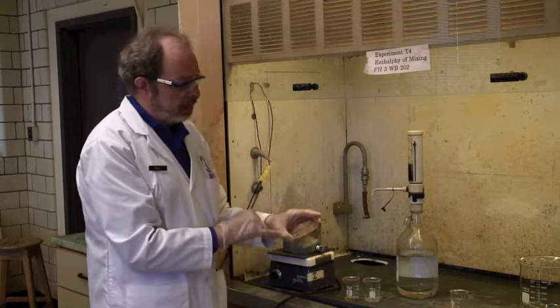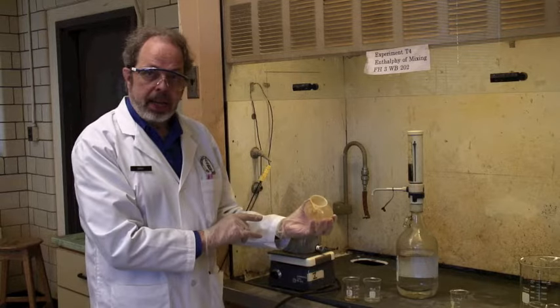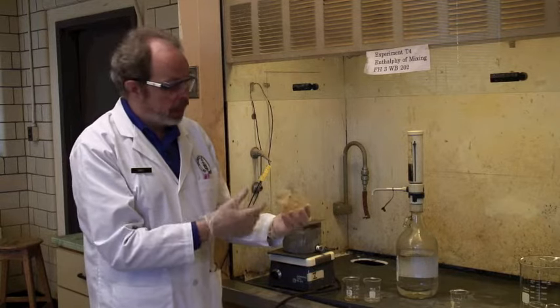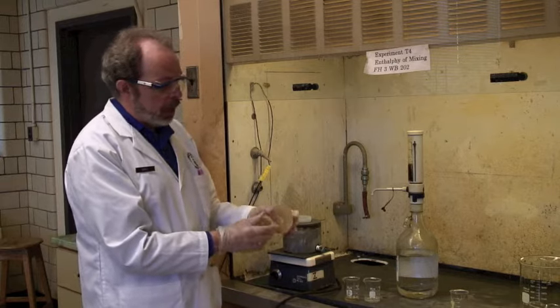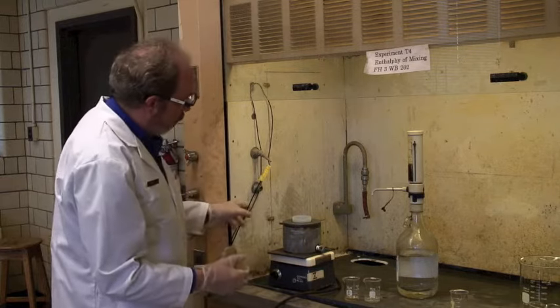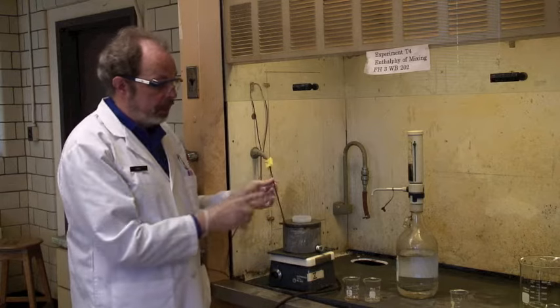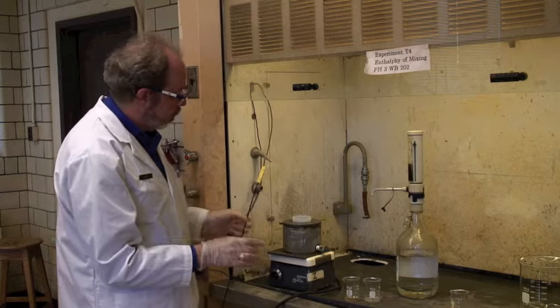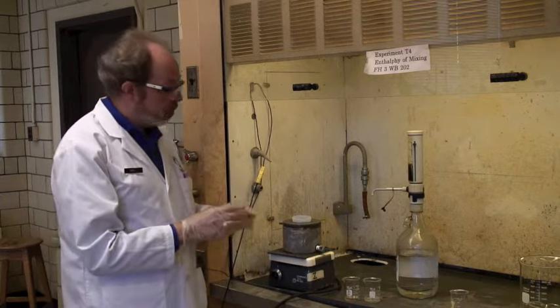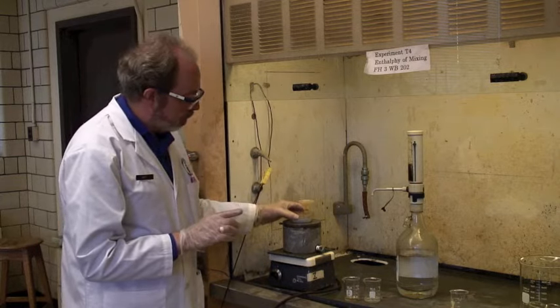The lid for the calorimeter has a funnel for adding the second chemical. You start off with one chemical, and then you add the second through the funnel, and there's also a hole for the thermocouple. This is a Teflon-coated thermocouple. It will detect temperature, and it's plugged into a computer, and we'll show you how that works in a minute.